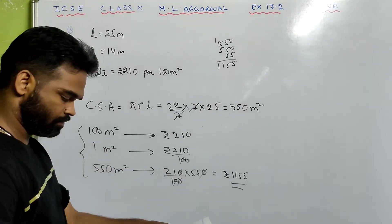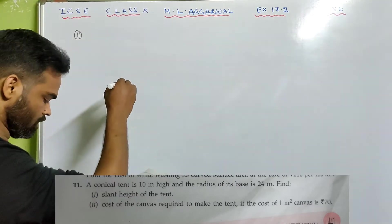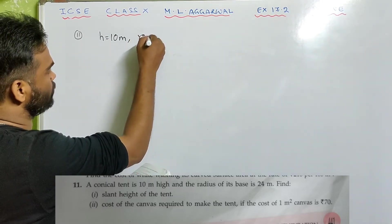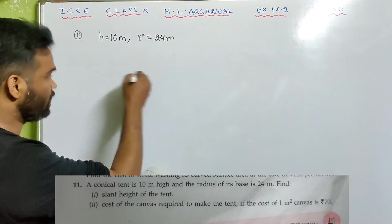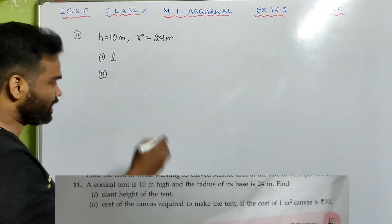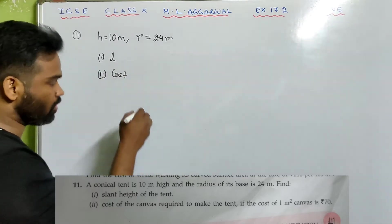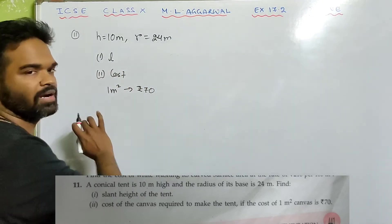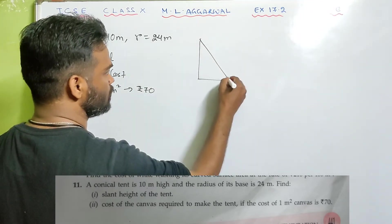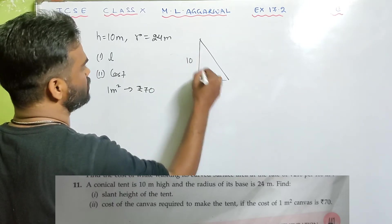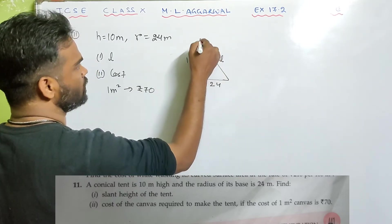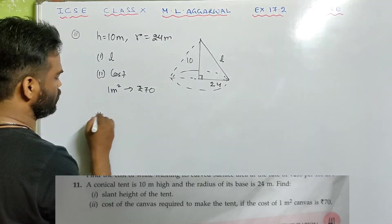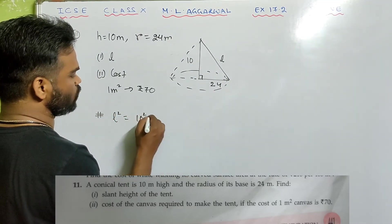Sum number 11: A conical tent is 10 meter high and its base radius is 24 meter. Find its slant height, and the cost of canvas required to make the tent if the cost of 1 meter square is rupees 70. First we find the slant height. By Pythagoras theorem: l² = 10² + 24².